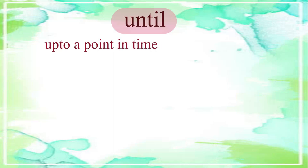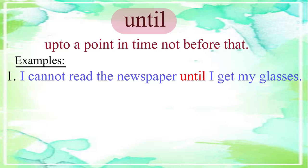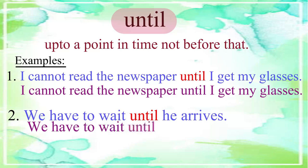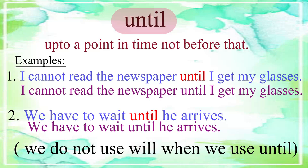The conjunction 'until' is used to indicate up to a point in time, and not before that. For example: 'I cannot read the newspaper until I get my glasses.' We have to note that we do not use 'will' when we use 'until.' It is wrong to say: 'We will have to wait until he will arrive.'